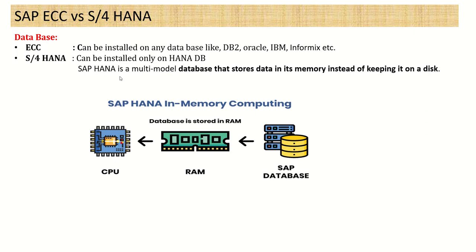The HANA database is a multimodal database that stores data in its memory instead of on a disk. As you can see in this diagram, in the case of HANA, the data is directly stored in RAM instead of disk. Reading from RAM is very, very fast compared to the old disk concept. This is a major change in ECC versus S4 HANA — HANA DB is a game changer from the performance point of view.